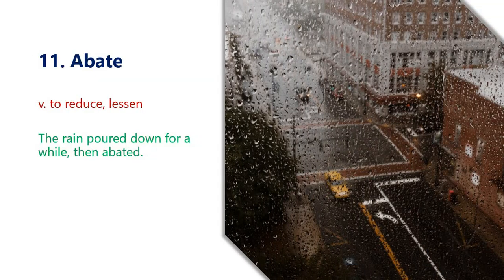The first word is abate, which means to reduce or lessen. For example: the rain poured down for a while then abated, meaning after pouring down for a while the rain stopped or reduced. In this picture we can see the rain is stopping.